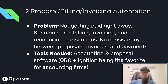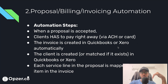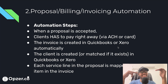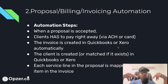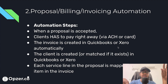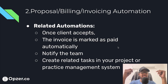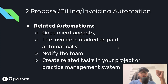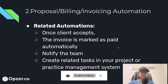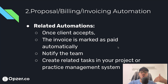Ignition is a favorite in the accounting firm space and one of our recommendations. The step-by-step automation works like this: when the proposal is accepted, the client pays right away — both steps happen simultaneously. The system then automatically creates the invoice in QuickBooks or Xero, creates or matches the client record, and maps service lines to invoice line items. You can also notify the team of the new client and automatically create all related tasks in your project or practice management system with assignments and due dates.